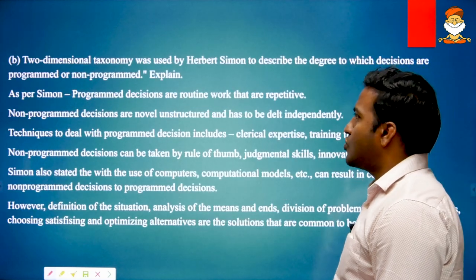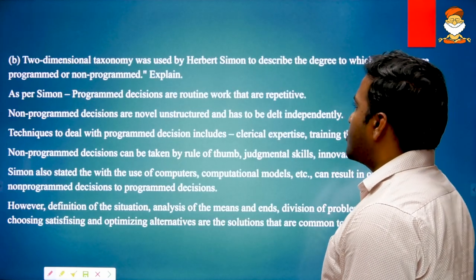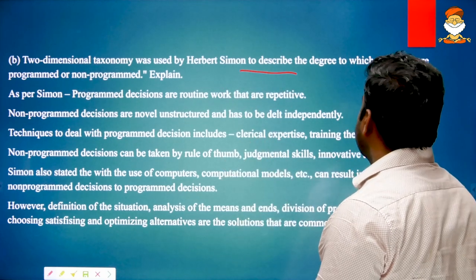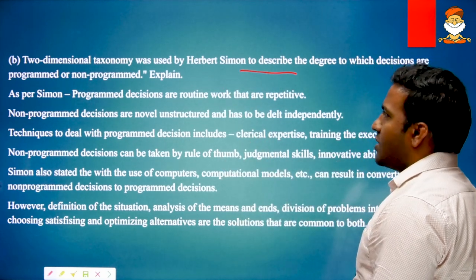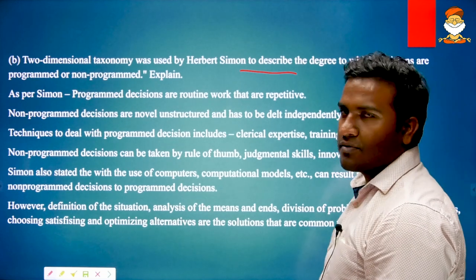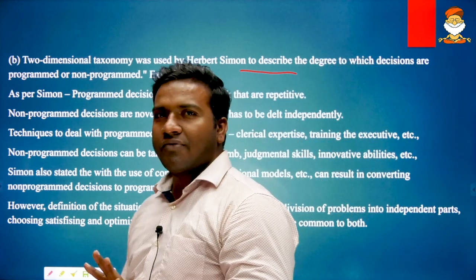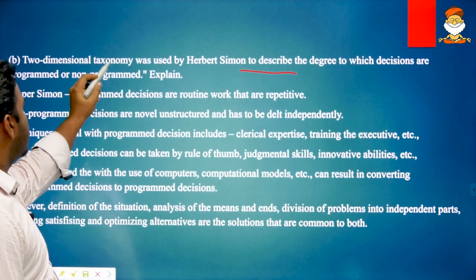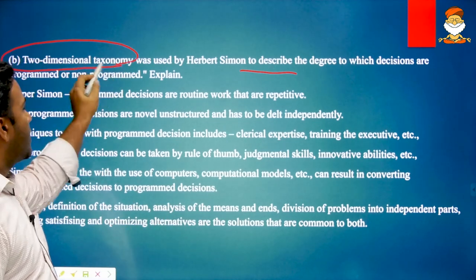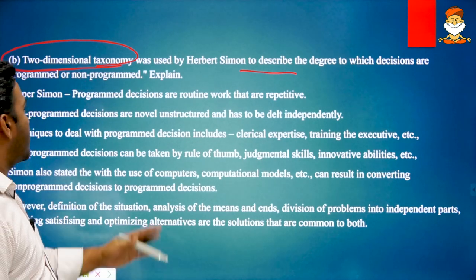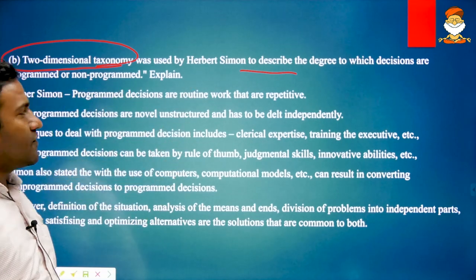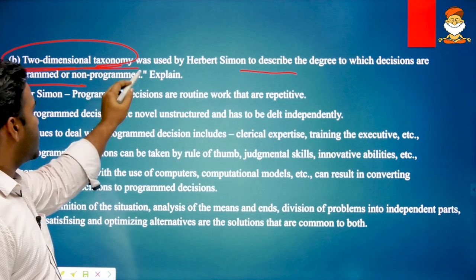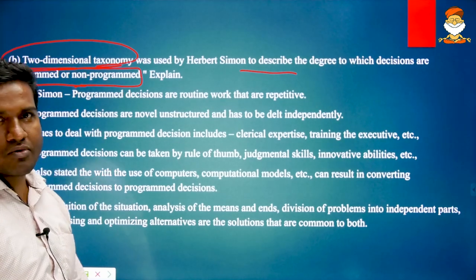Next question: 'Two-dimensional taxonomy was used by Herbert Simon to describe the degree to which decisions are programmed and non-programmed.' Here we have to be thorough with Herbert Simon's theories. The taxonomy itself is the value-fact dichotomy — value-free science and all those things.